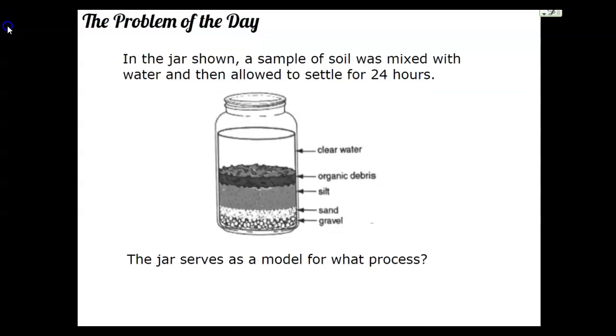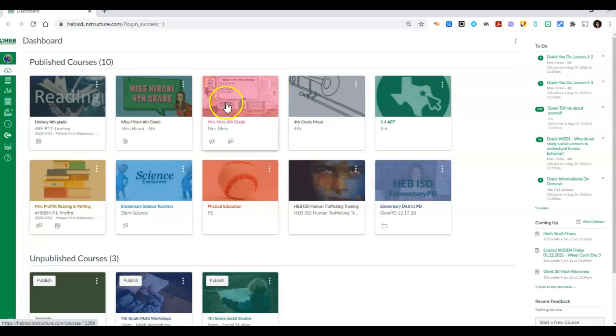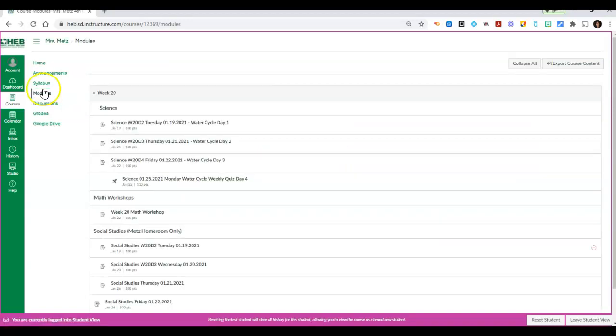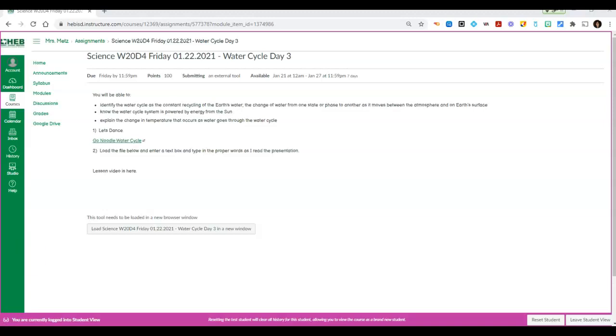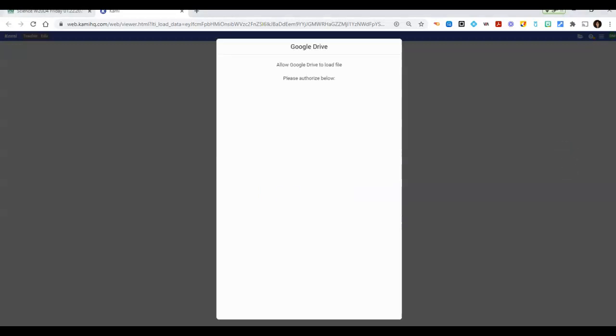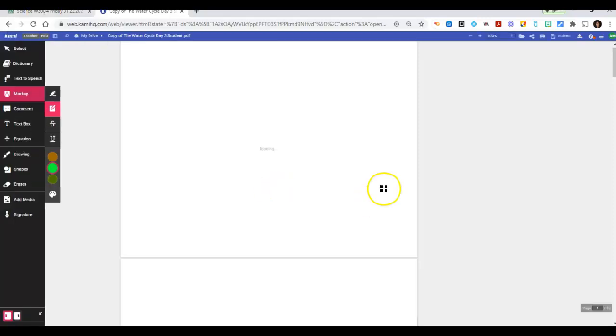Okay, let me show you. You're going to go into Canvas, go into the dashboard, click on modules. It is the Science Week 20 Day for Friday, January 22nd, 2021, Water Cycle Day Three. Click on that. Scroll down and load the file below. You may have to authorize yours, that is fine. And then it should come up.